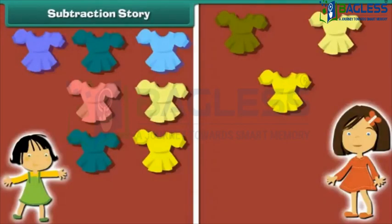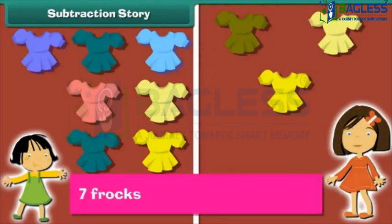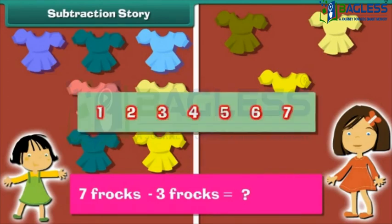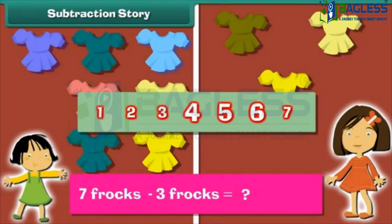Subtraction story. Mona has seven frogs. Tina has three. How many frogs does Mona have more than Tina? Count backwards from the larger number seven. We count three numbers because Tina has three frogs. Six, five, four. Mona has four frogs more than Tina.